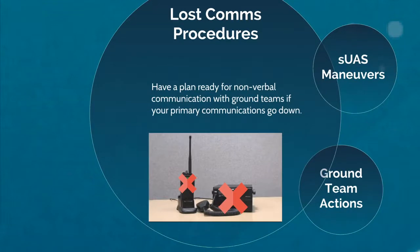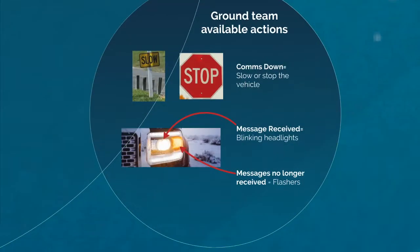During a sortie, your radio communications will rarely be available 100% of the time, so have your nonverbal communications plan pinned down in advance. If ground team finds they're receiving radio messages but cannot broadcast, they can slow or stop their vehicle and look for any inbound SUAS — a drone might be inbound to begin lost comm maneuvers. If still receiving but can't send back out, they can blink their headlights to signal 'message received.' If no longer receiving anything and can't send out, they can turn on their flashers.